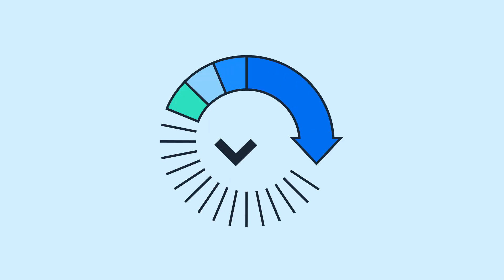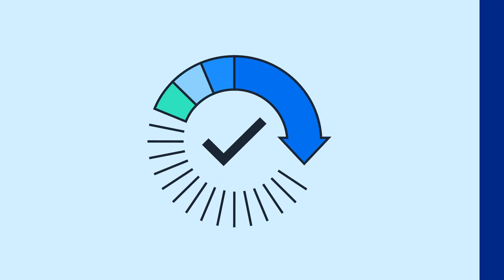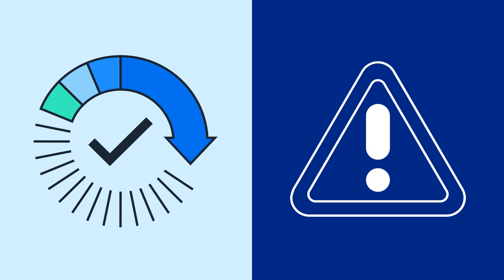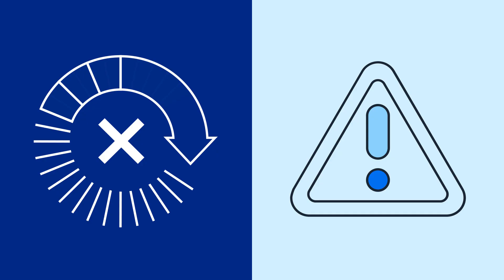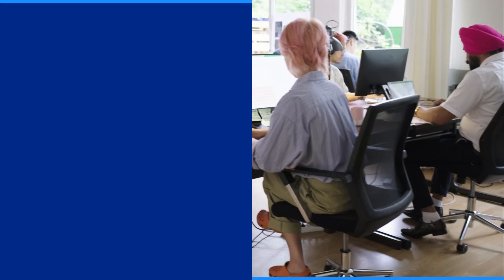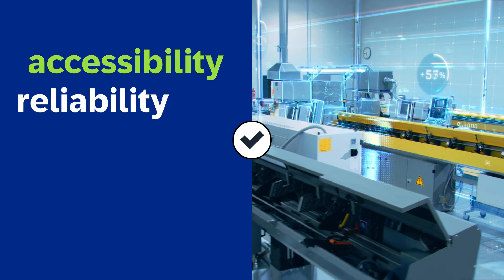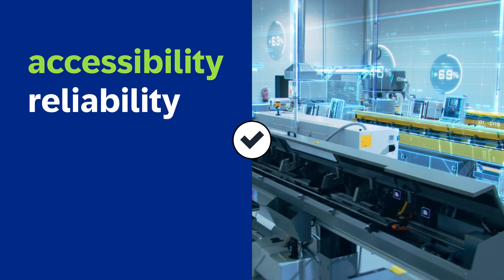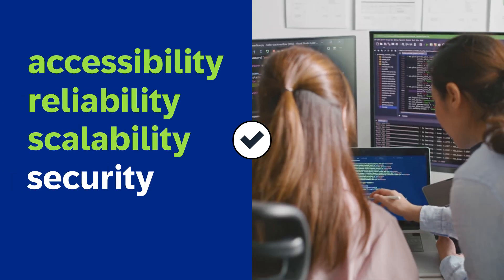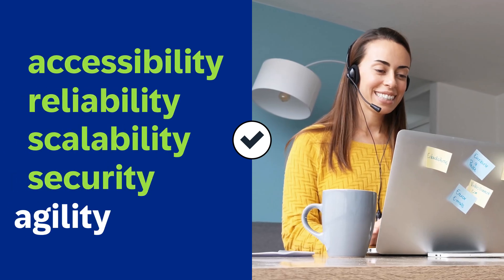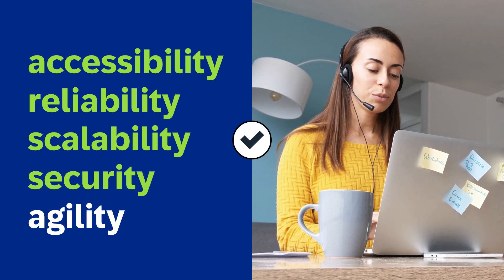Why is data architecture so important? Because data infrastructure makes all the difference between optimal performance and continual headaches. It's critical for data accessibility, reliability, scalability, security, and organizational agility.